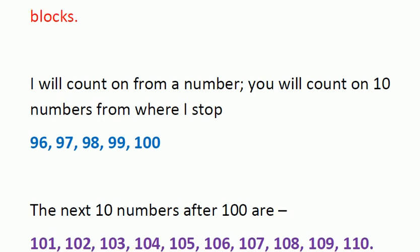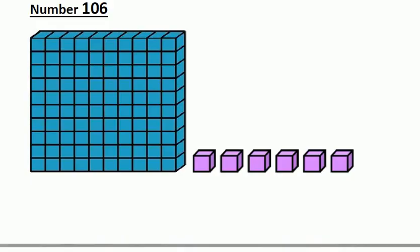So children, in today's class we are going to make numbers that are more than 100 using place value blocks. Let's take an example of number 106. The number 106 is a three-digit number. To show the number 106, we need 1 hundred's block, 0 ten's blocks and 6 one's blocks.